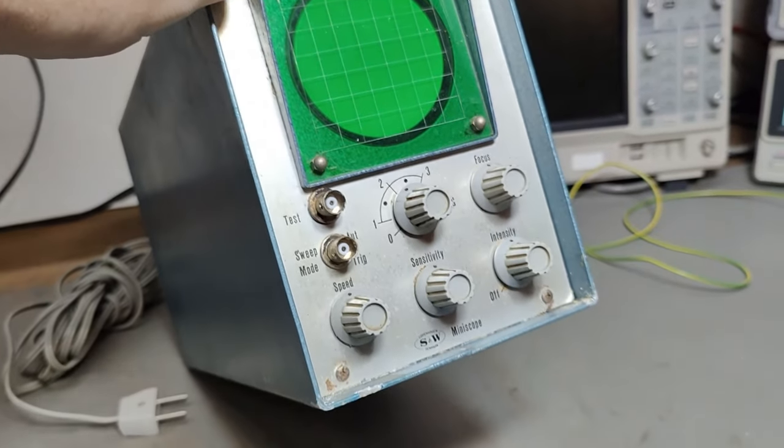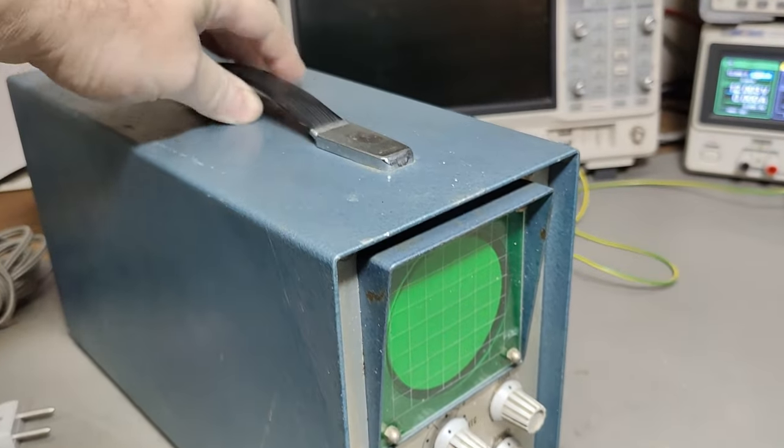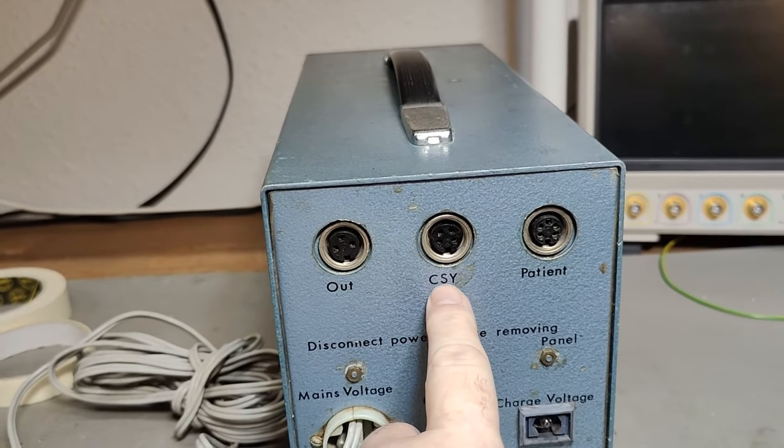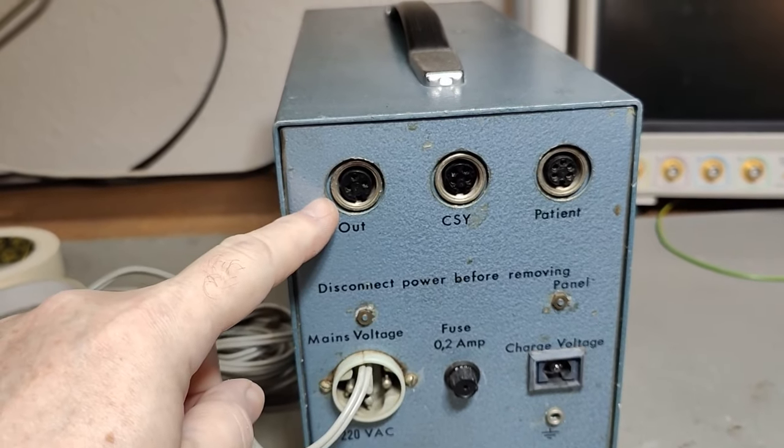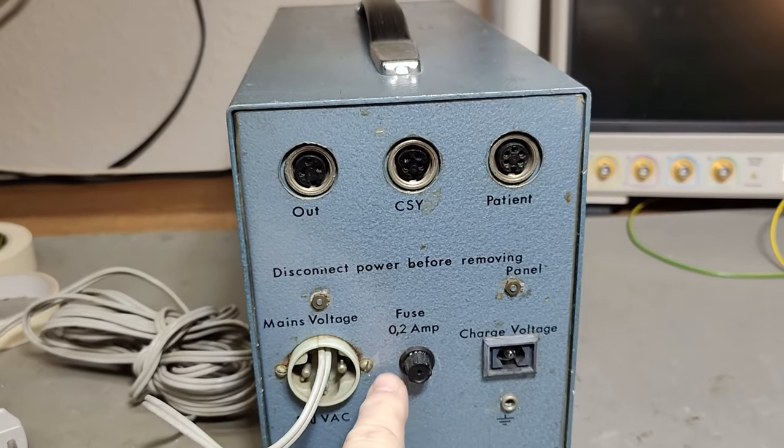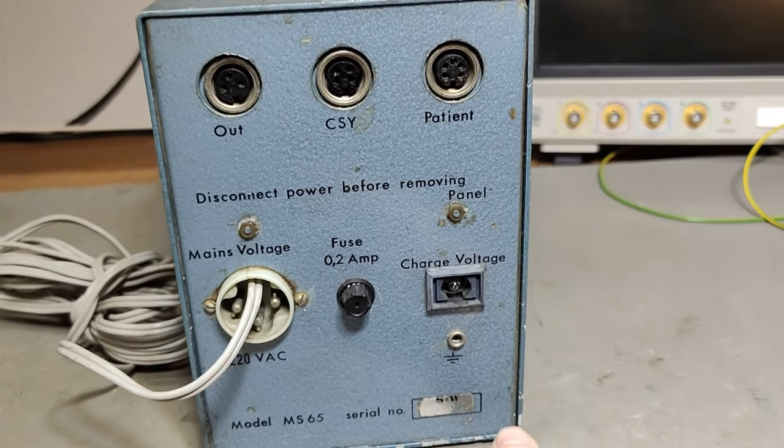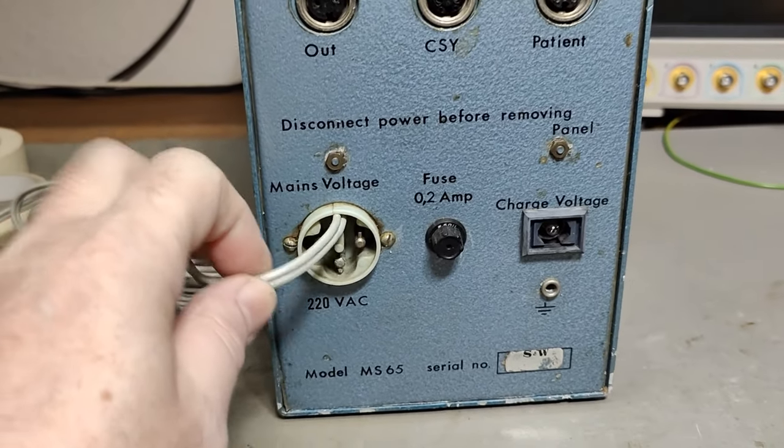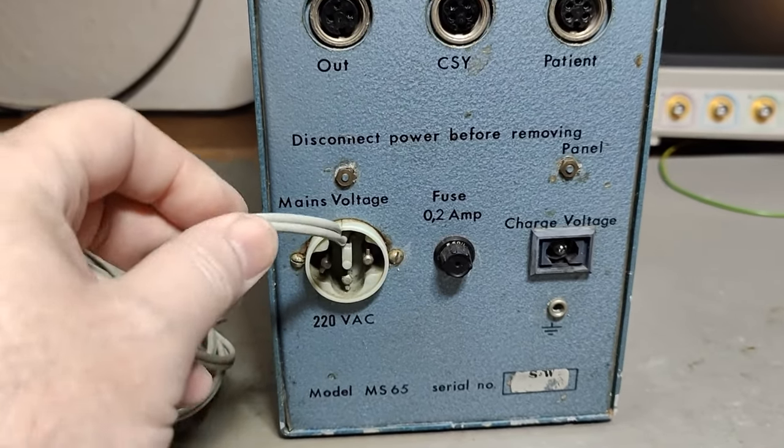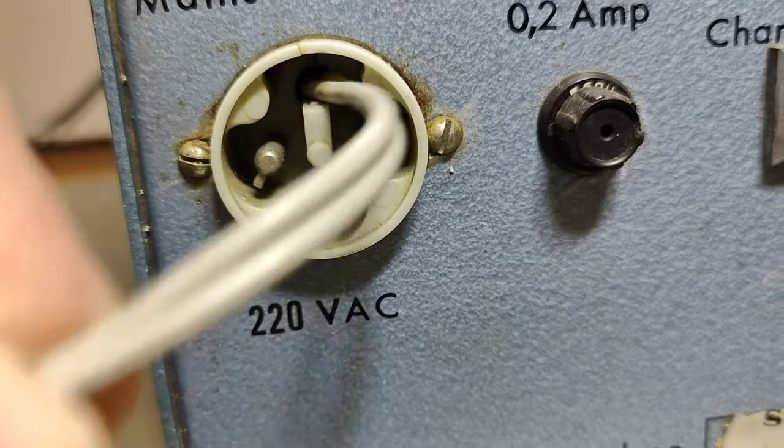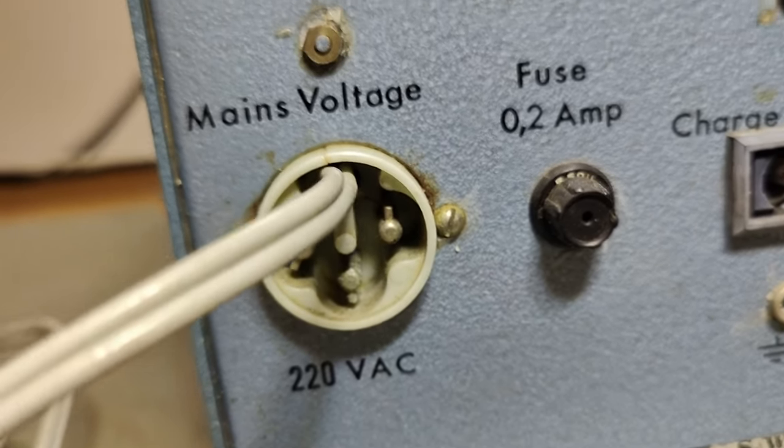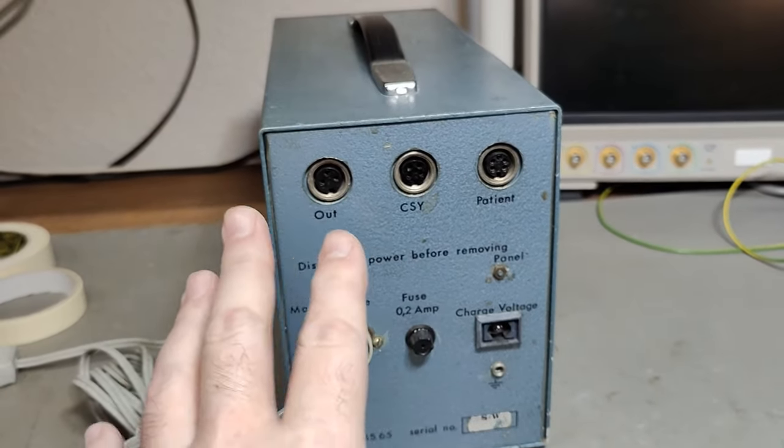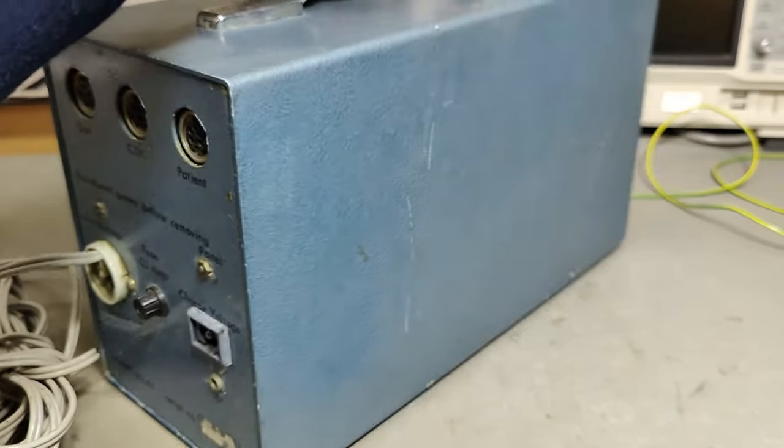Look, it is very, very old and quite heavy actually. We got some patient input, CSY output, fuse, charge voltage. The model number is MS 65. Look at that funny, funky mains power connector, and somebody modified this. It's quite a nice modification that would definitely work. I'm a little bit worried about this charge voltage, so my first move is definitely let's open this and do a little bit of inspection.